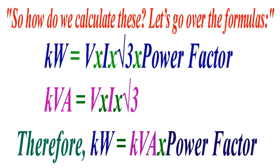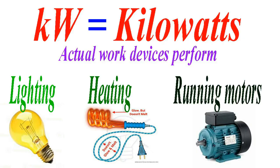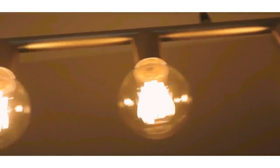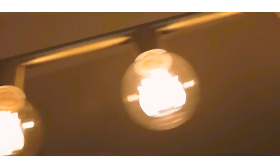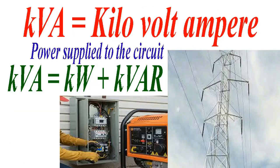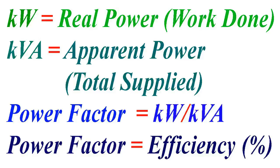So how do we calculate this? Let's go over the formulas. KW is equal to V times I times √3 multiplied by the power factor, and KVA is equal to V multiplied by I multiplied by √3. Therefore, KW is equal to KVA multiplied by the power factor. When we think of KW we are thinking about actual work being done — is there heat or light being produced? If so, we rate it in kilowatts. When we think KVA, we are talking about how much energy is supplied or stored — the capacity to transfer energy.